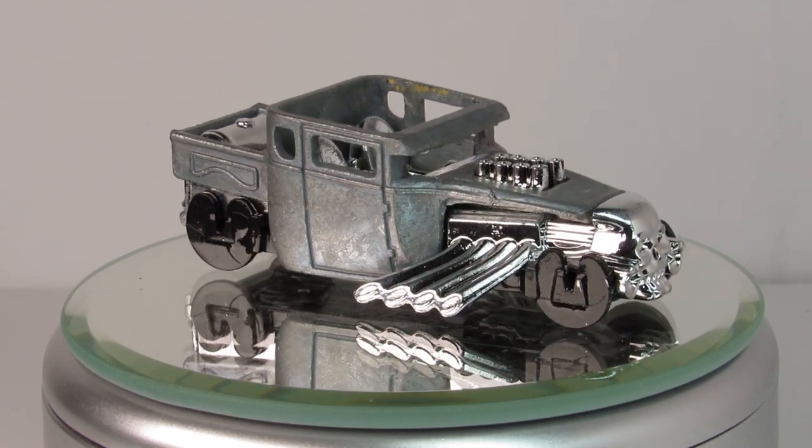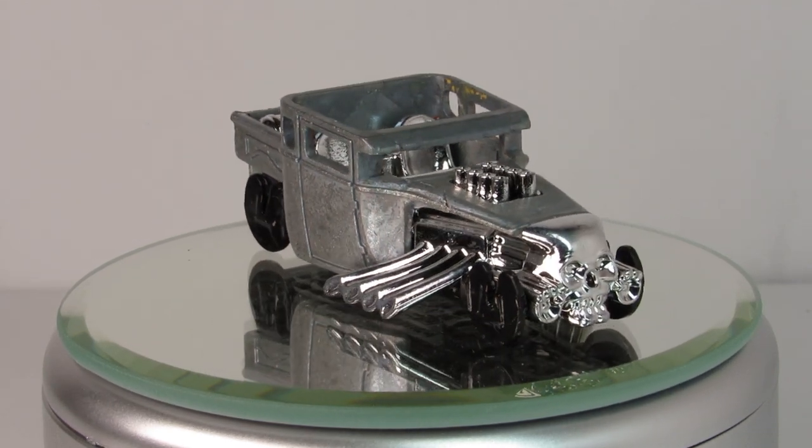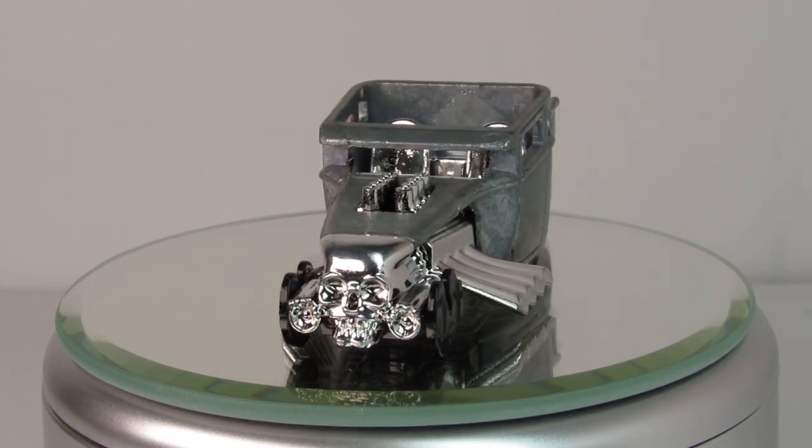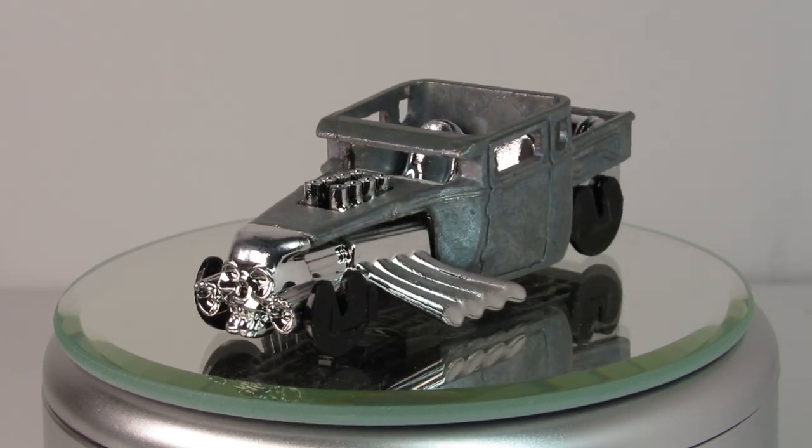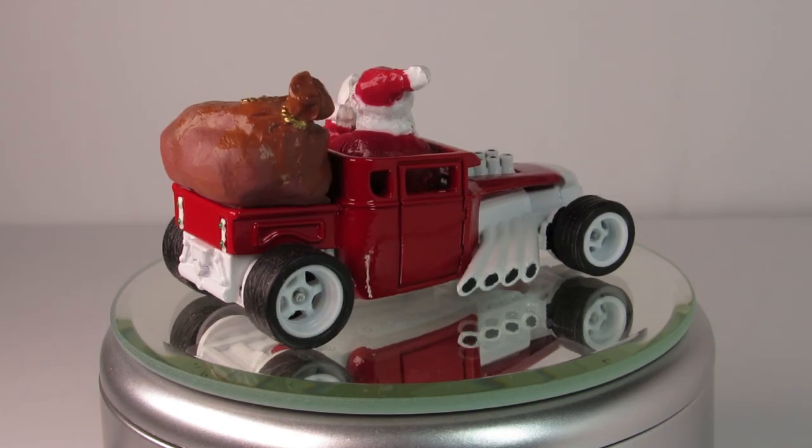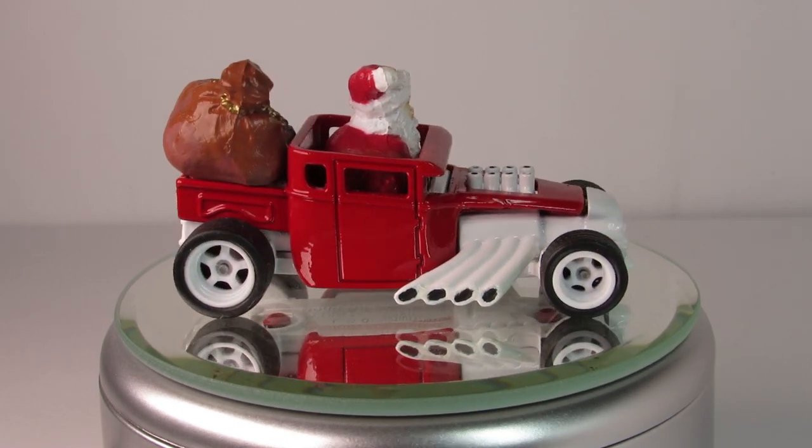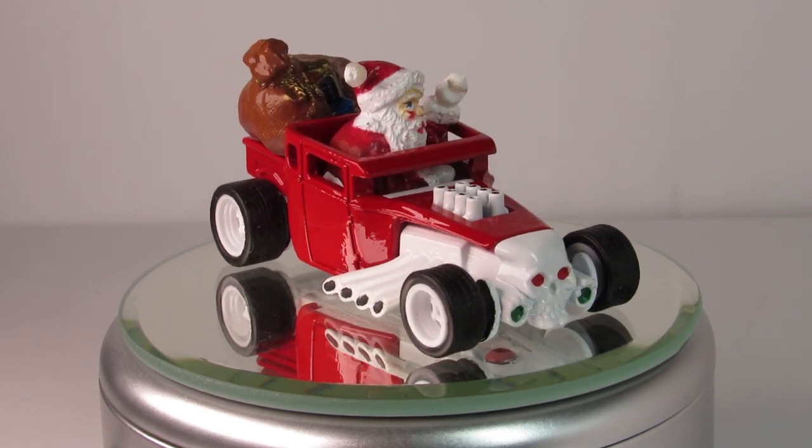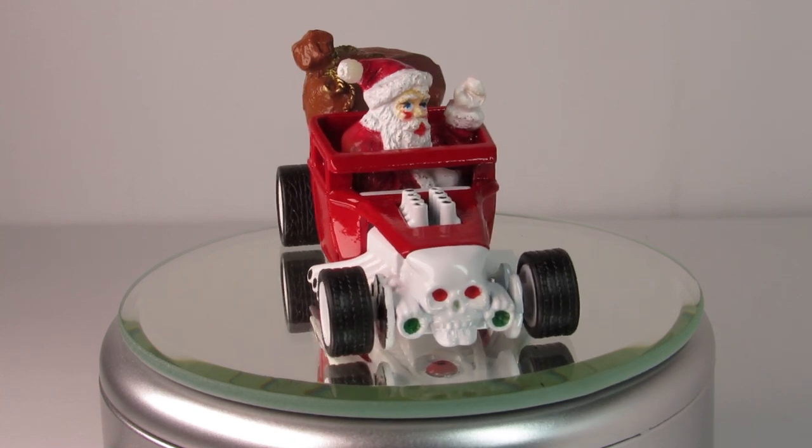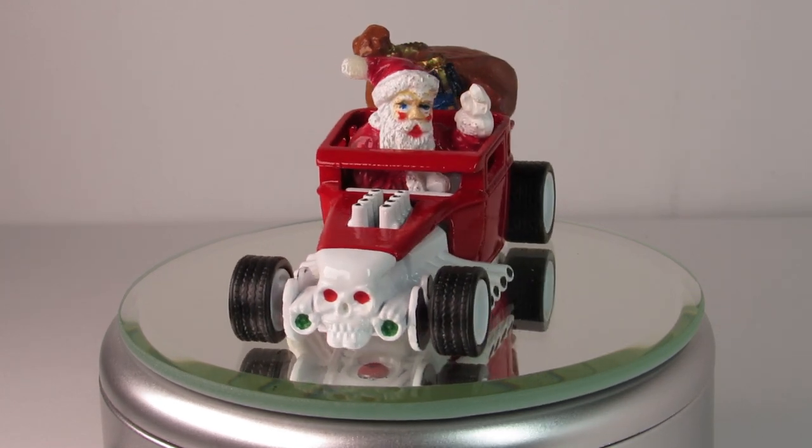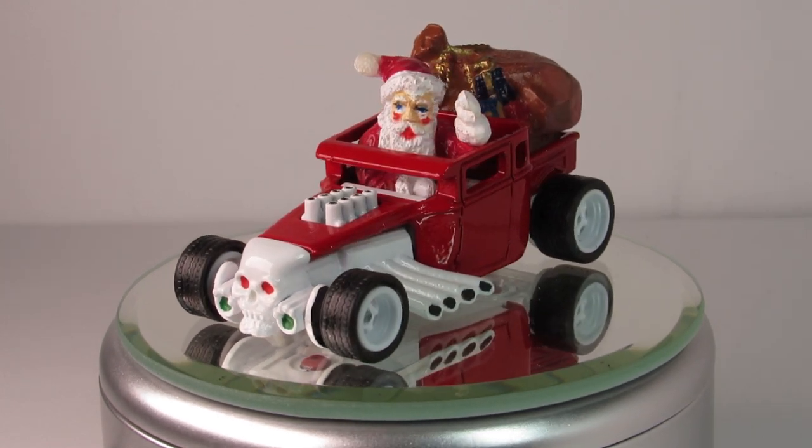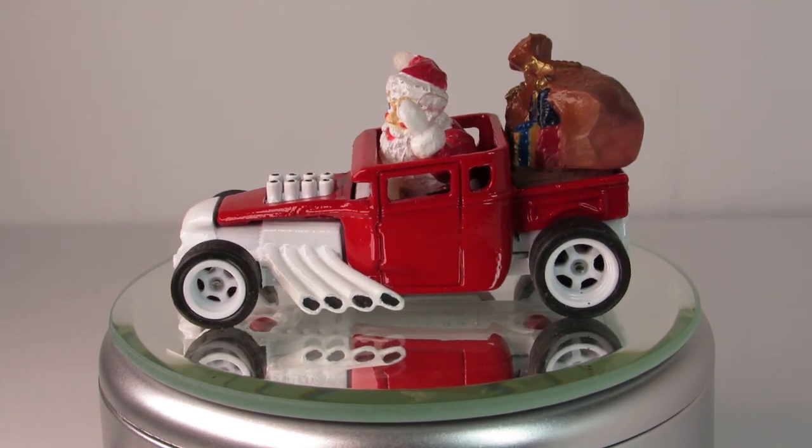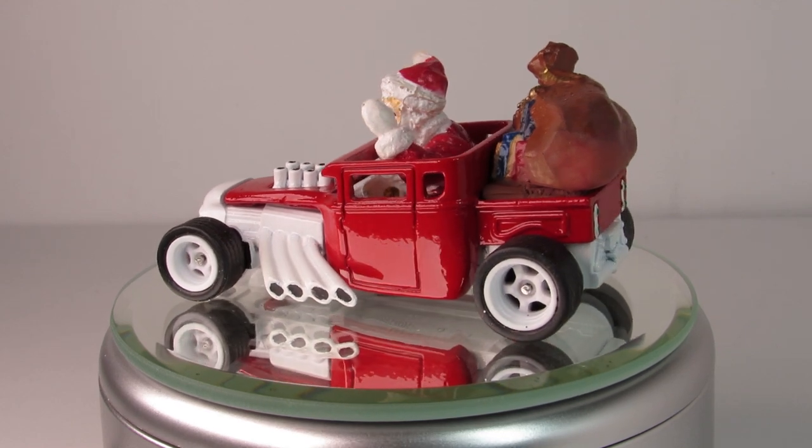So there's where we started. Just a clean, basic casting. One that was sitting around. Here's where we ended up. Santa's sleigh. Bag of toys. Bone shakerized. And there you can see the spokes of the wheels show up better because of that black behind them.